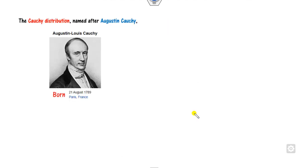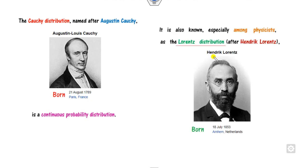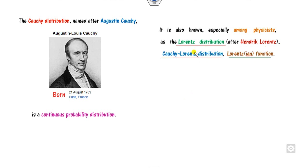First, we will discuss a brief history of the Cauchy distribution. It was first defined by Augustin Cauchy, who was born in Paris in 1789. This Cauchy distribution is a continuous distribution function. In most cases it is also called the Lorentz distribution, or the Cauchy-Lorentz distribution or Lorentz function.